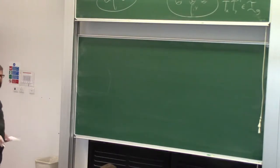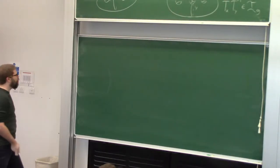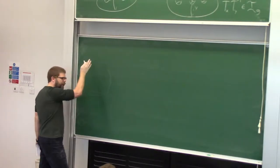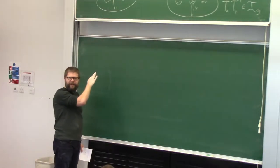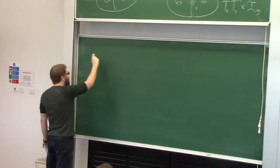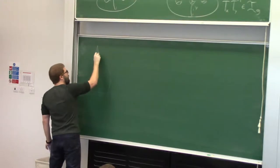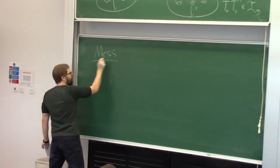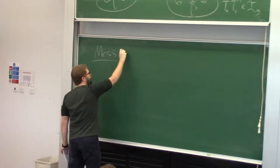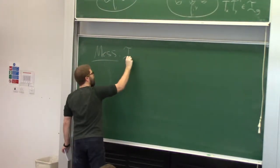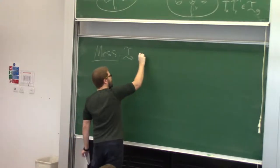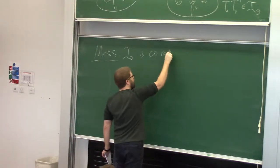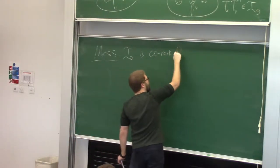And in some cases that's sort of true. There's a famous theorem of McCullough-Miller that says in genus 2, it's not finitely generated. And that was improved by Mess in his PhD thesis, who showed that Torelli_2 is an infinite rank free group.